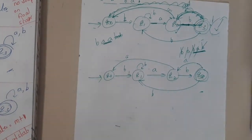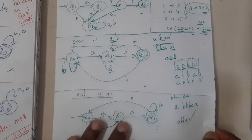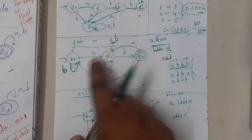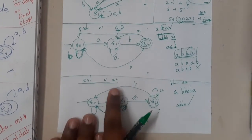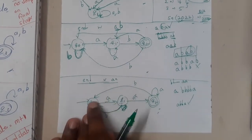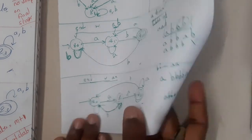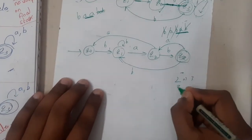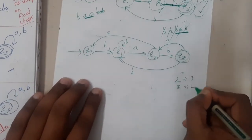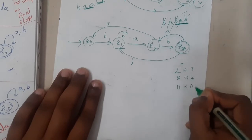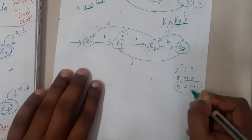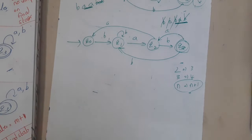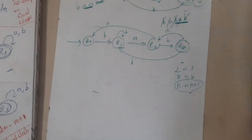Analyzing the state counts: for 'ending with aa' (length 2) we have 3 states; for 'ending with bab' (length 3) we have 4 states. So for ending with a string of length n, we need n+1 states.